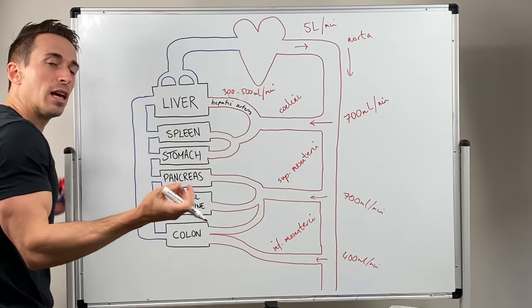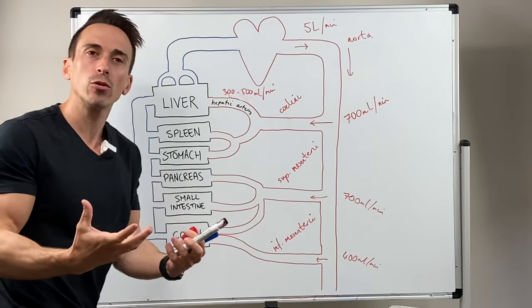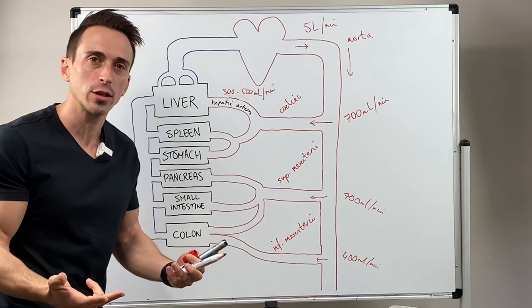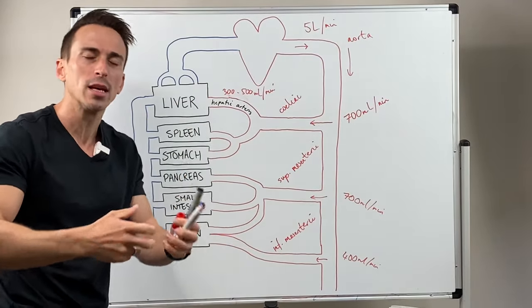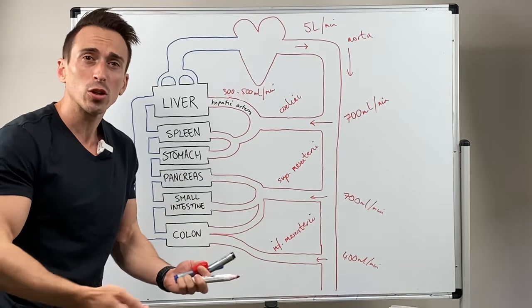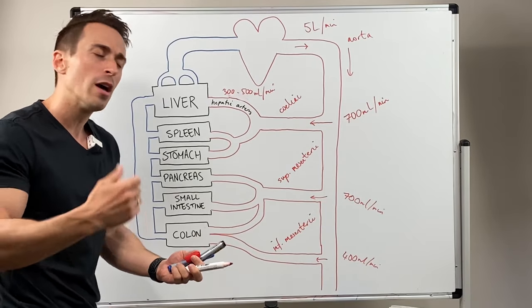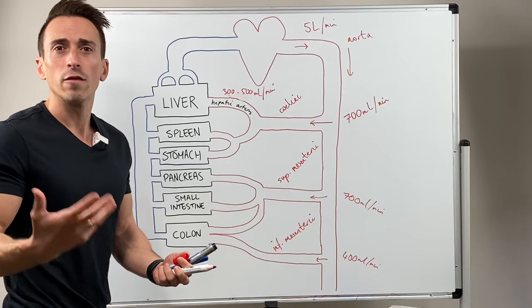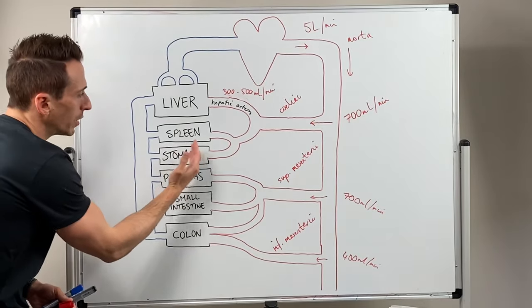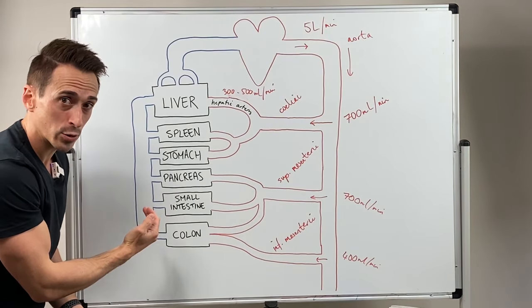The other thing is the whole point of the gastrointestinal tract is to take macronutrients, proteins, fats, carbohydrates for example, and break them down into their smallest components, their most absorbable components, which can include things like glucose, galactose, fructose for carbohydrates, fatty acids and glycerols for fats and amino acids for proteins. They get absorbed from these particular structures into this venous supply as well.